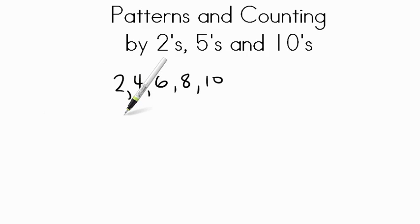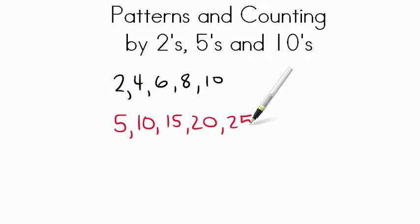Same thing. Start with five, five plus five is ten, five more is fifteen, five more is twenty, five more is twenty-five. When we're counting by fives, notice it goes always five, then zero, five, then zero, five, and then so on. Always with fives, you'll have either a five or a zero when you're counting by fives.